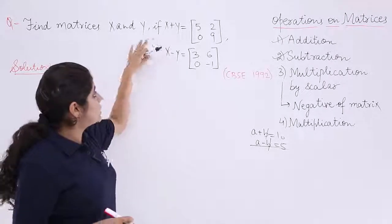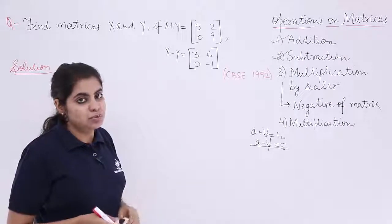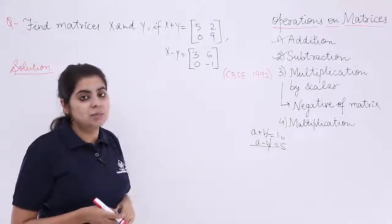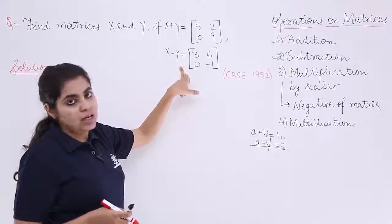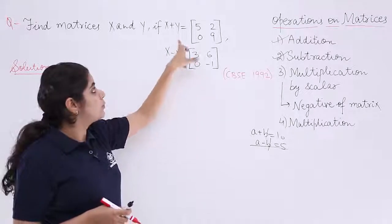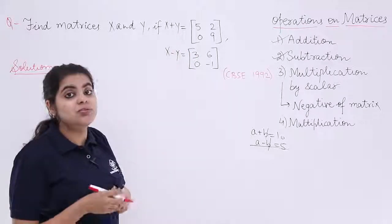We know that X plus Y is given to me, we also know that X minus Y is given to me. This is a question asked in CBSE paper 1992 board exam. So if I add these two things, X plus Y and X minus Y, plus Y and minus Y get cancelled and you have only X plus X which is 2X.